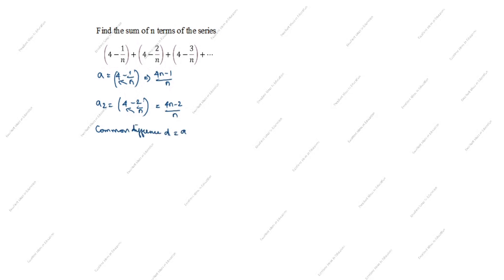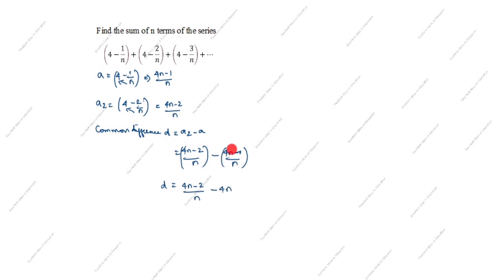The common difference d = a2 - a1. Substituting: d = (4n - 2)/n minus (4n - 1)/n. Removing the bracket, d = (4n - 2)/n - (4n - 1)/n. Since both denominators are n, we take the common denominator n: d = (4n - 2 - 4n + 1) / n.